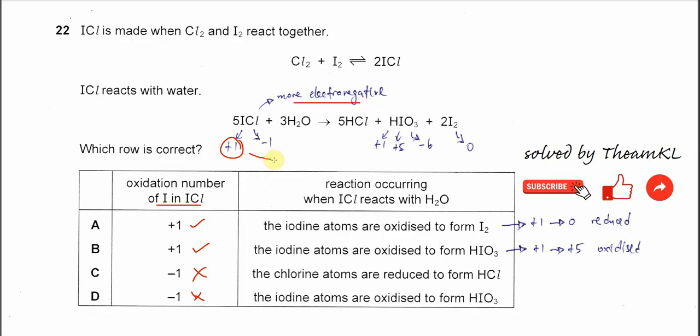So it will form this positive five and this zero oxidation state. So because it says that from this iodine atoms to this iodine molecule, so it's from positive one to zero, it's actually reduced.